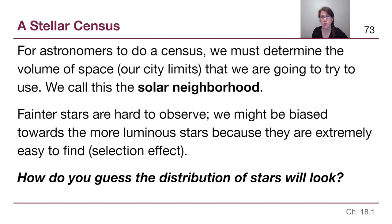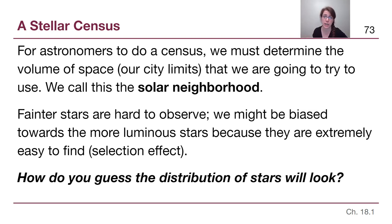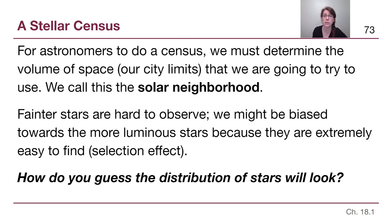Before I give you the distribution on the next slide, I want you to think about those different types of stars that we learned about. In the previous chapter, we learned the stellar type letters: O, B, A, F, G, K, M. We don't have to have them memorized. But how do you guess the distribution of stars is going to look? Are there going to be roughly equal amounts of everything? Are there going to be mostly one type of star, and if so, which kind? So think about that briefly.